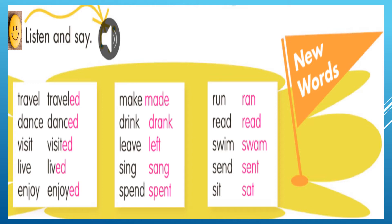Entonces hemos revisado los verbos en español y sabemos que en la segunda columna tenemos los verbos en pasado simple: traveled, danced, visited, lived, enjoyed, made, drank, left, sang, spent, run, read, swam, sent, y sat.